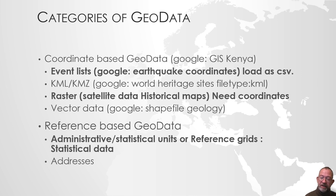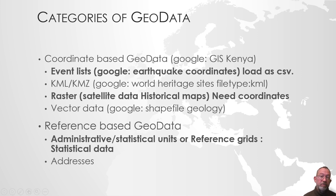When looking for data, you should be aware of the two types of data you can use in QGIS. You can use data that is coordinate-based — data that already has coordinate data in it — what you might call typical GIS data, spatial data.